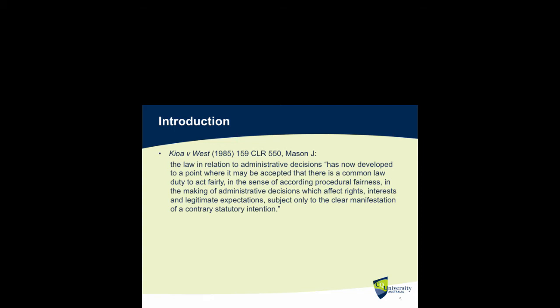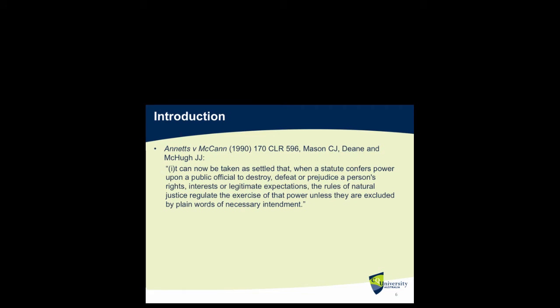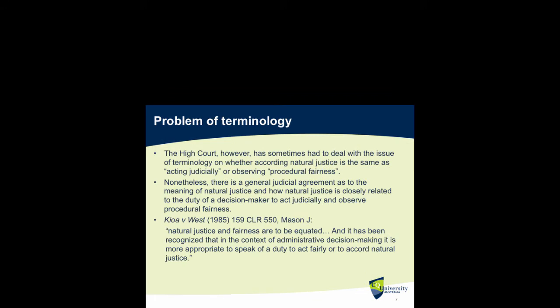In Annette v McCann, Chief Justice Mason and Justices Dean and McHugh said it can now be taken as settled that when a statute confers power upon a public official to destroy, defeat, or prejudice a person's rights, interests, or legitimate expectations, the rules of natural justice require the exercise of that power unless they are excluded by plain words of necessary intent.